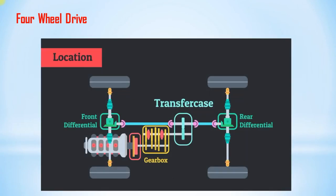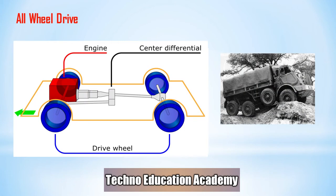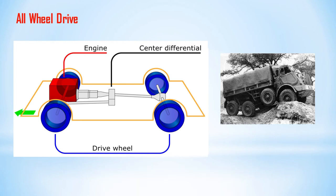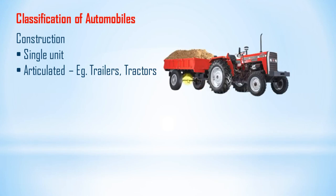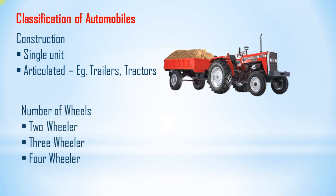Four-wheel drive uses a transfer case to optionally convert to two-wheel drive. All-wheel drive uses a central differential to distribute equal torque to all wheels. We can also classify automobiles by construction: single unit, and articulated — meaning having two or more sections connected by flexible joints, such as tractors. According to number of wheels, automobiles are classified as two-wheeler, three-wheeler, and four-wheeler.